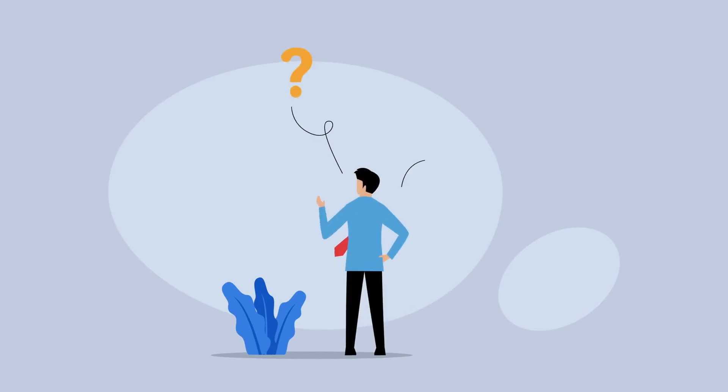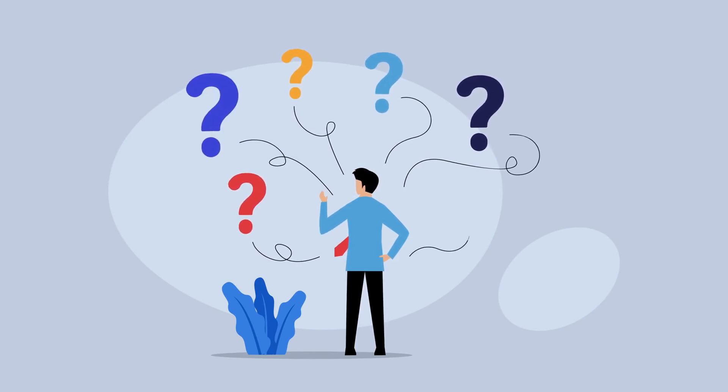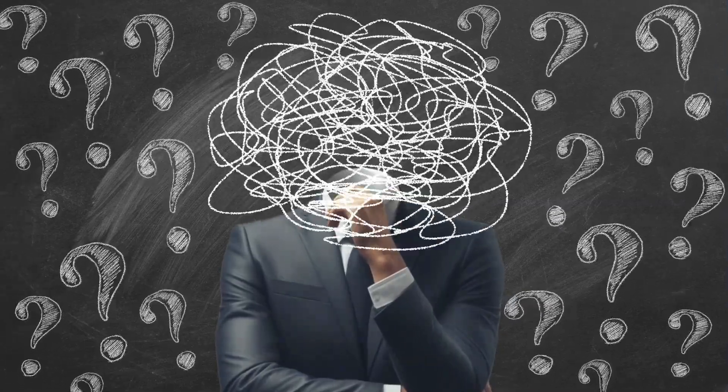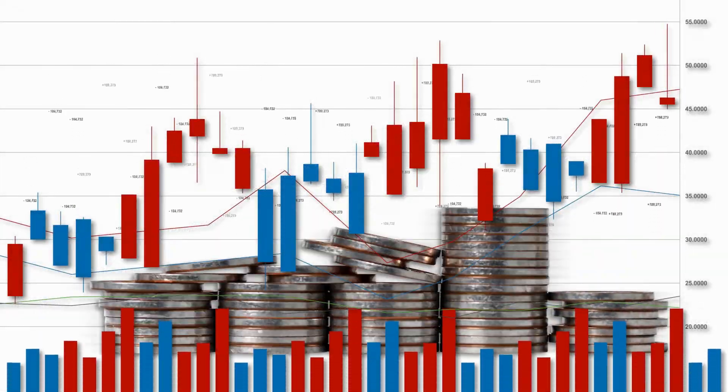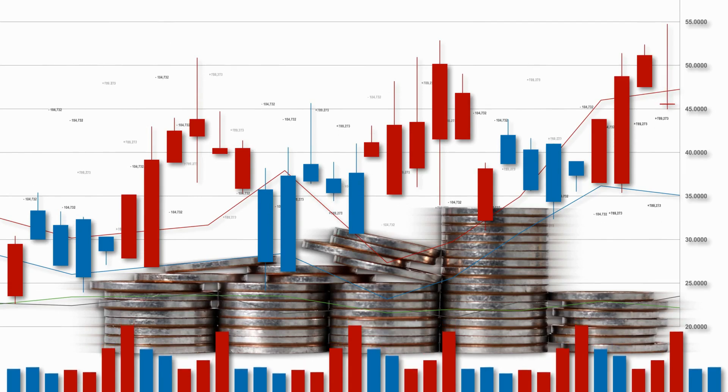A powerful dynamic that can significantly influence decision-making is herd behavior, as the person follows the decisions and behaviors of others instead of acting independently. This type of behavior during market booms can drive investors into irrational exuberance, leading to inflated asset prices and increased risk exposure.